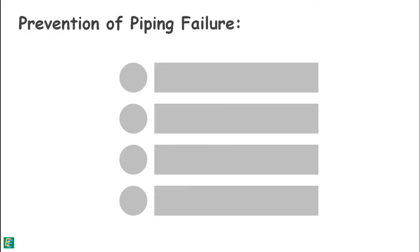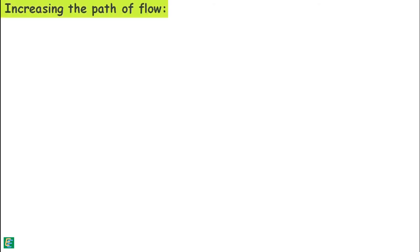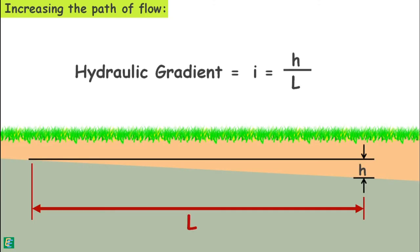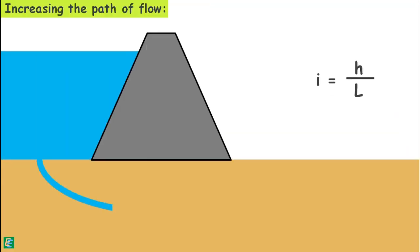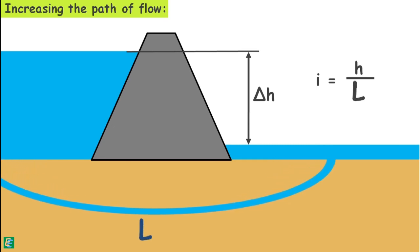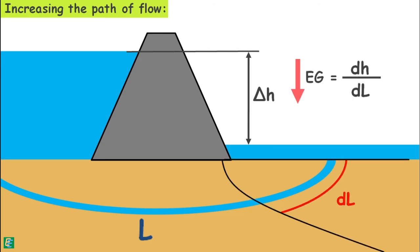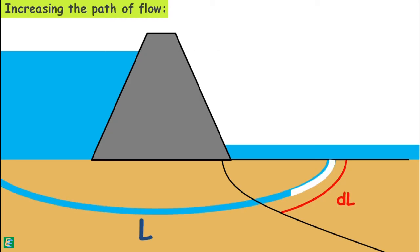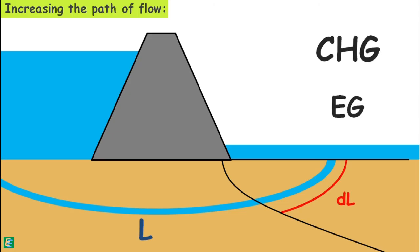There are a few methods through which we can prevent piping failure. The first is increasing the path of flow. We know the hydraulic gradient is the head loss divided by the length of flow. It is difficult to decrease the head loss, but we have control over the length of flow over which water percolates. If we increase the length of flow, the hydraulic gradient will decrease, also causing a decrease in the exit gradient, making the structure safe.